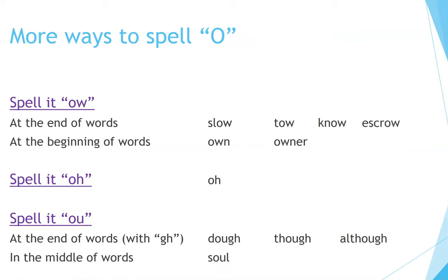Spell it OW: at the end of words — Toe, Know, Escrow; at the beginning of words — Own, Owner. Spell it OH: Oh. Spell it OU: at the end of words with GH — Doe, Though, Although; in the middle of words — Soul.